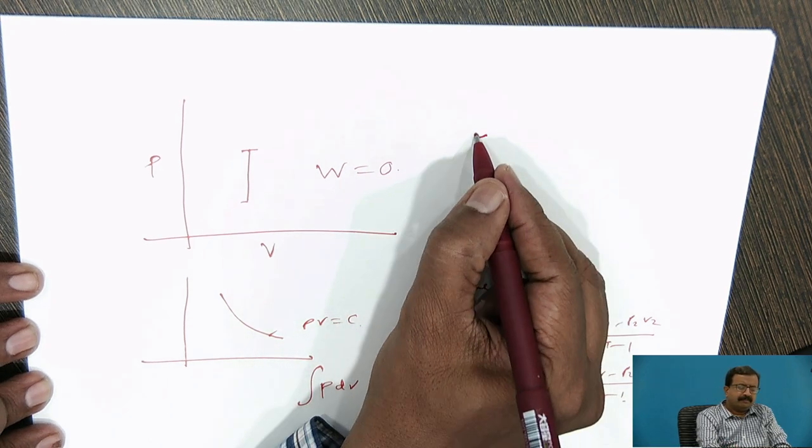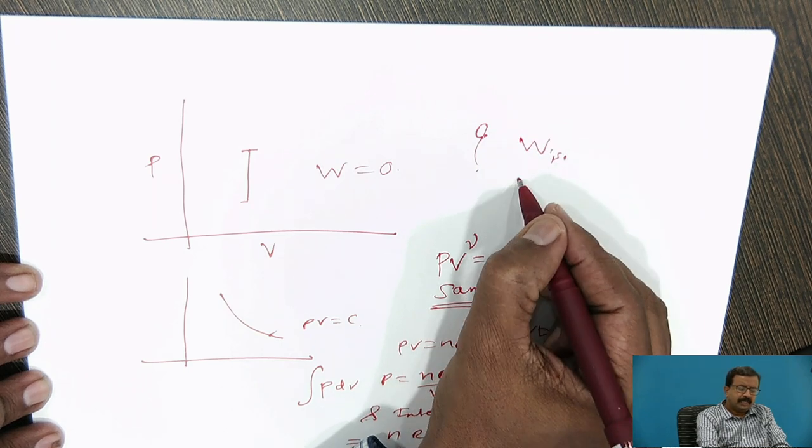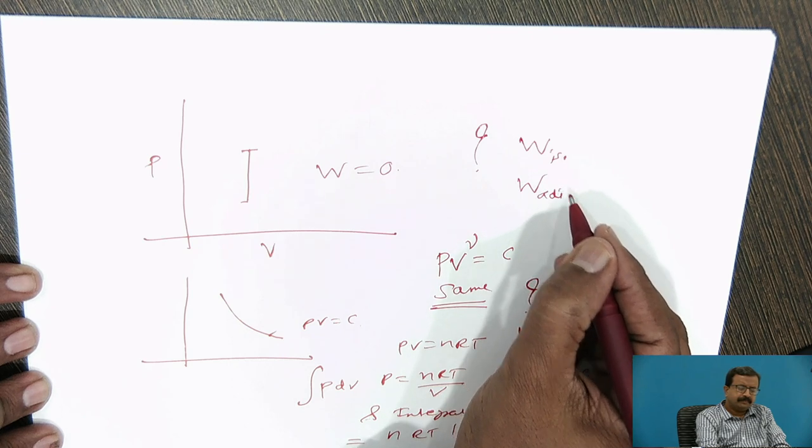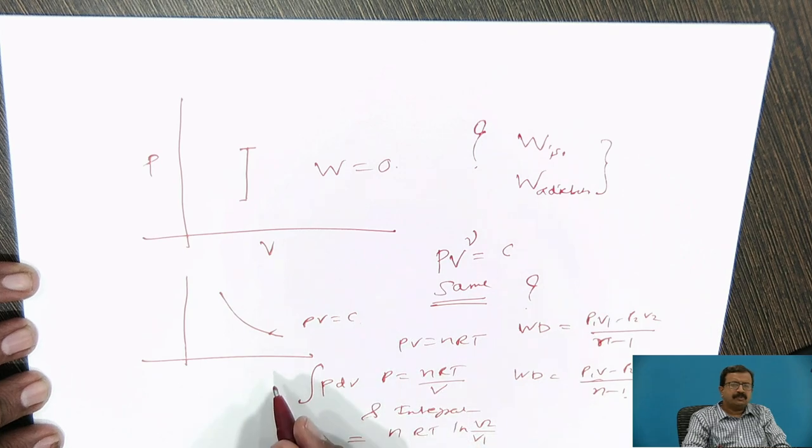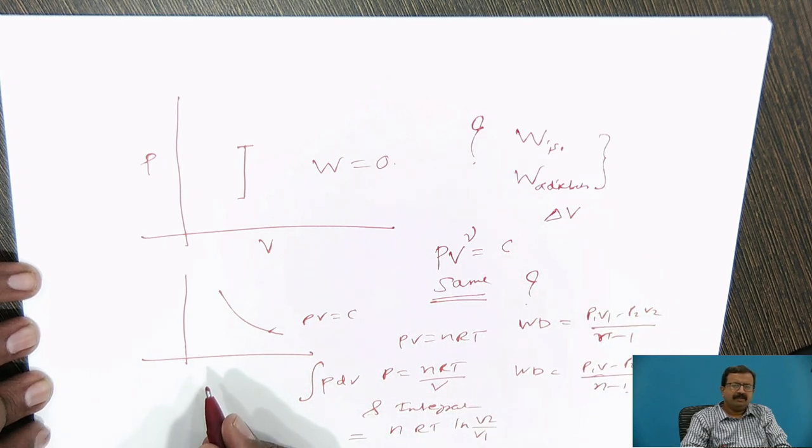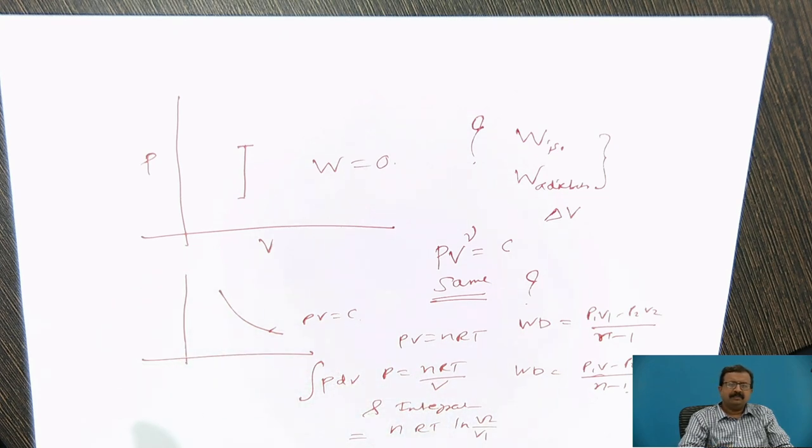And simple question, w isothermal and w adiabatic. In this process, which work is greater for the same delta v, for the same change in delta v, which work is greater. So you do this calculation, and in the third session, we will see the first law of thermodynamics, its limitations, and why we need to go for the second law of thermodynamics.